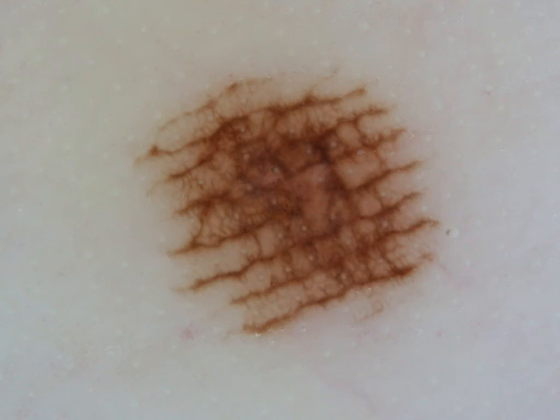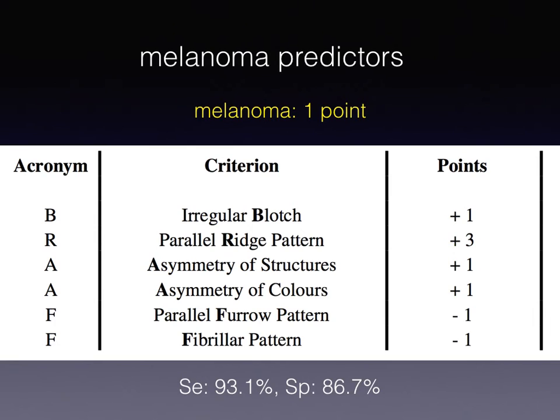Scenario two is also easy: we apply our dermatoscope and we see a parallel furrow pattern, maybe lattice-like in some parts of the lesion, but parallel furrow, completely symmetric with no other melanoma features. Or we see a fibrillar pattern with no other melanoma features — both counting for minus one point for melanoma. No problem, this is just nevus.